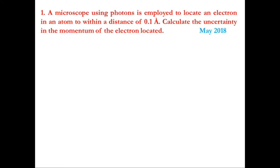A microscope using photons is employed to locate an electron in an atom to within a distance of 0.1 angstrom. Calculate the uncertainty in the momentum of the electron located. This question was asked in the year May 2018.